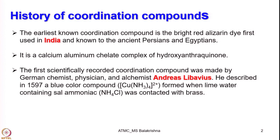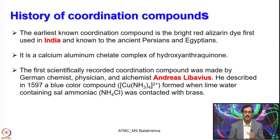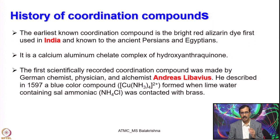The first scientifically recorded coordination compound was made by a German chemist, physicist and alchemist. In those days, every chemist or physicist or mathematician used to be an alchemist and they used to touch upon all these science subjects. Among them, the German chemist Andrea Leibov-Weweis was the first one who recorded an inorganic complex scientifically for the first time.